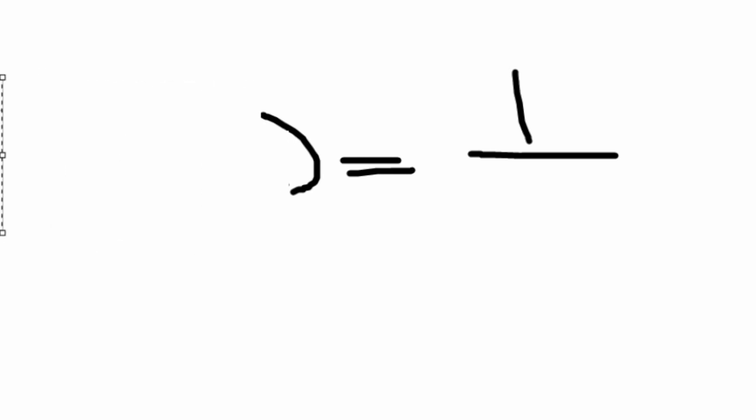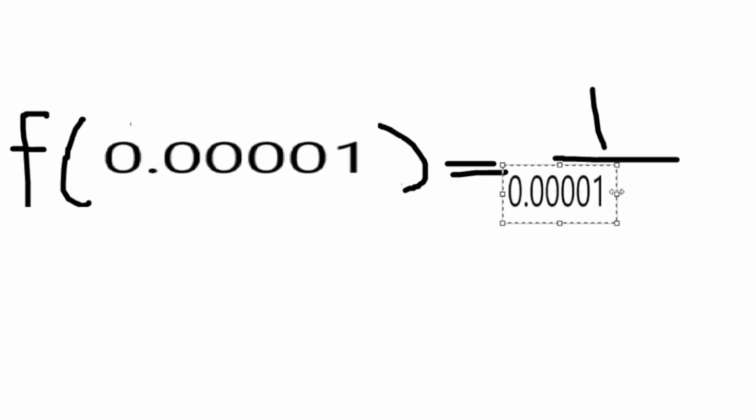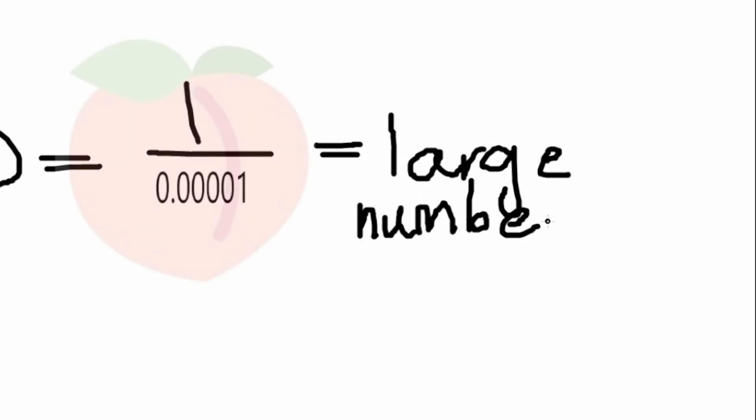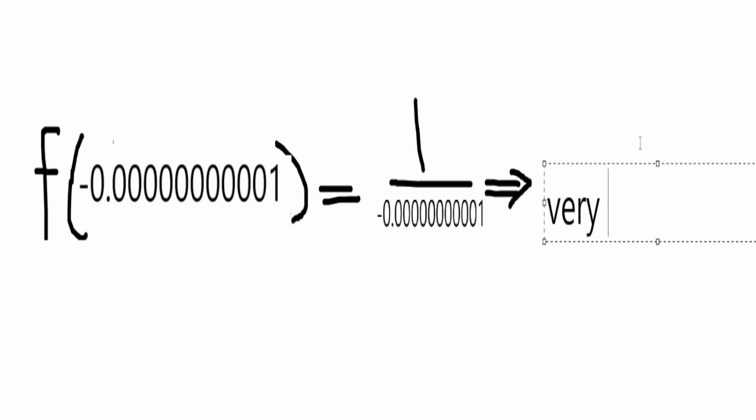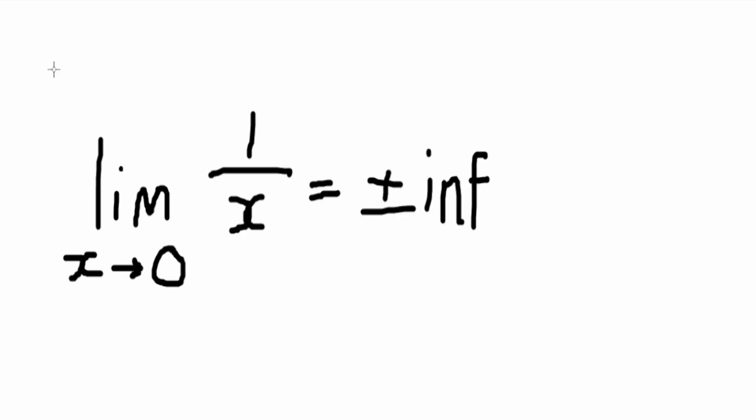If we start plugging in something like 0.0001, we notice that it is a very large, like again, keep increasing the amount of zeros, the larger it gets. Doing the same with a very small negative decimal gives us a very large negative. Therefore, the limit x tending towards 0 for 1 over x is plus or minus infinity. Now that you know this, you should be able to thug out this next section.